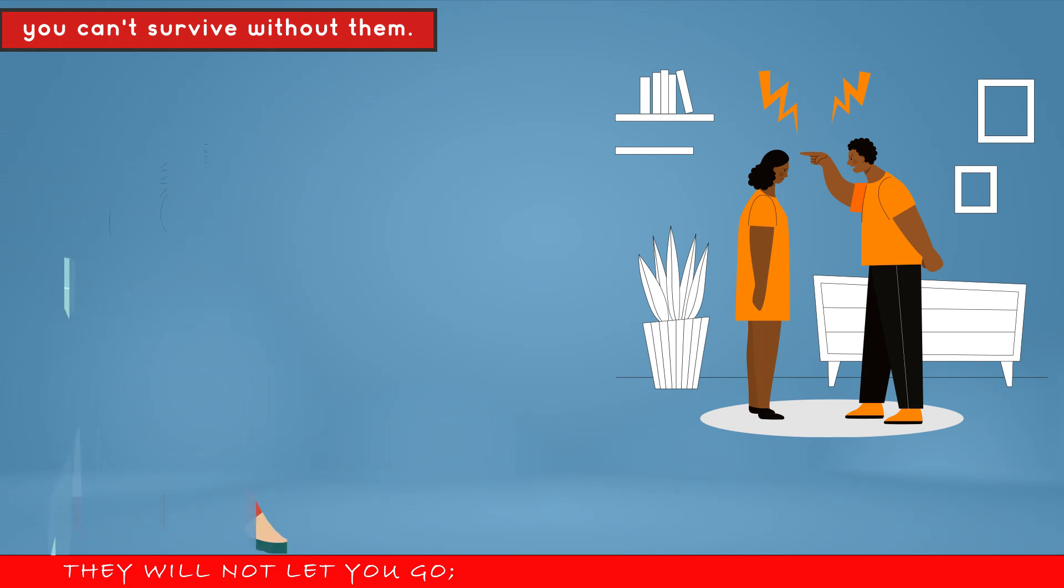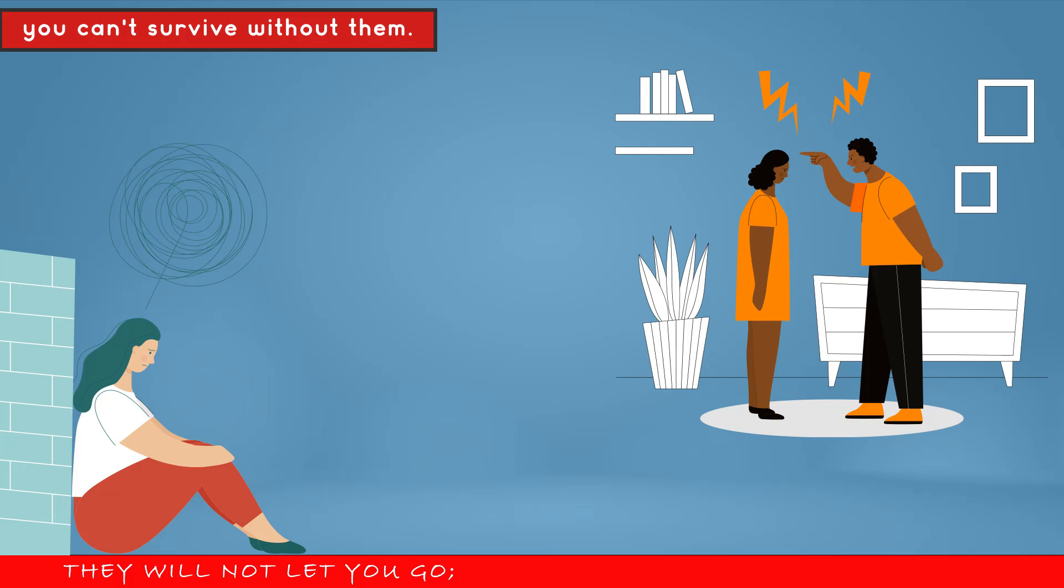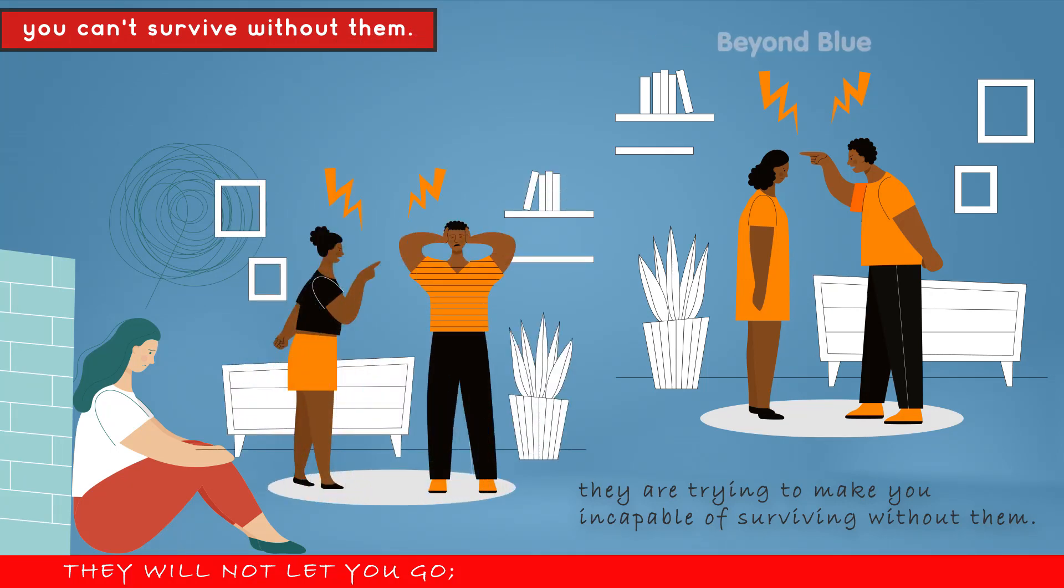Instead, they'll do everything to keep control over you. By controlling you and making you feel as if you're crazy, they're trying to make you incapable of surviving without them. They might even go ahead and insinuate that you're misunderstanding them. Of course, misunderstandings are common in relationships, but sociopaths tend to take it a notch higher.